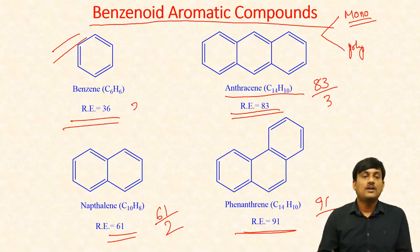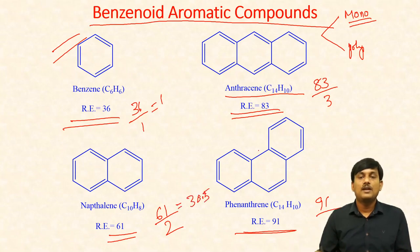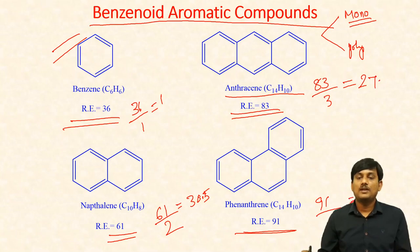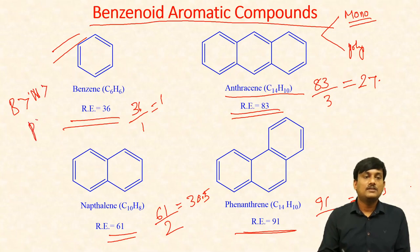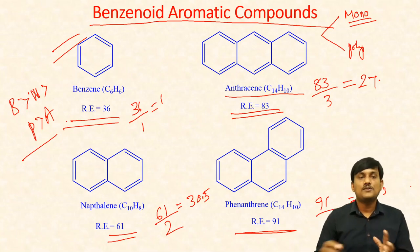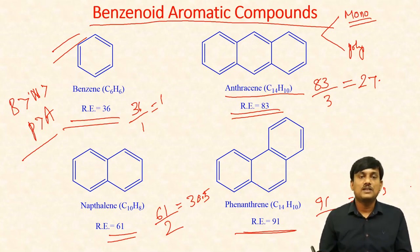Per ring, what is the resonance energy? For benzene: 36/1 = 36. For naphthalene: 30.5. For anthracene: about 27 point something. For phenanthrene: 30.33. So per ring, the stability order is: benzene > naphthalene > phenanthrene > anthracene. We know that stability is directly proportional to resonance energy per ring.